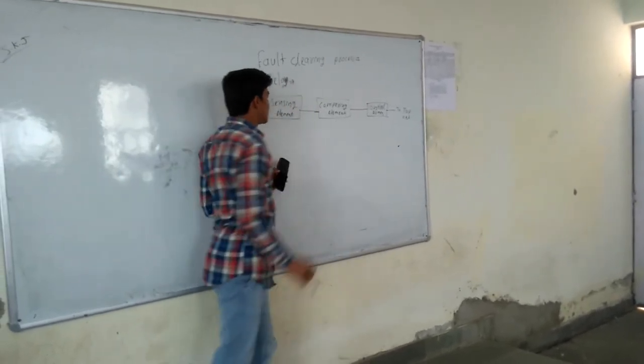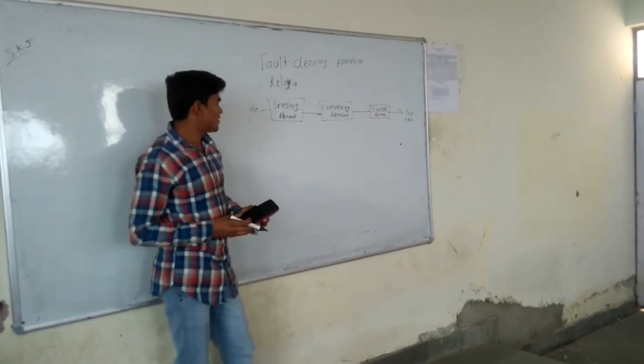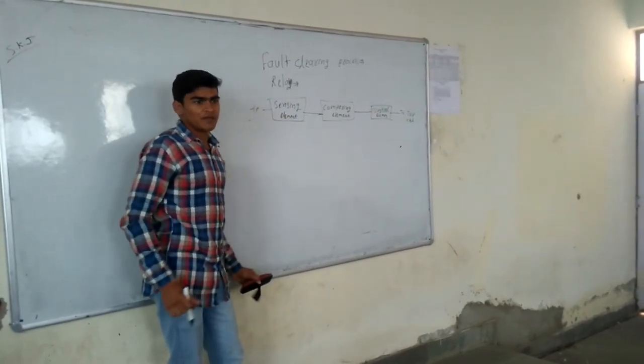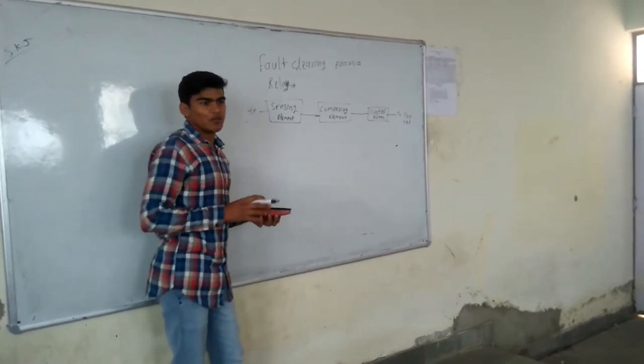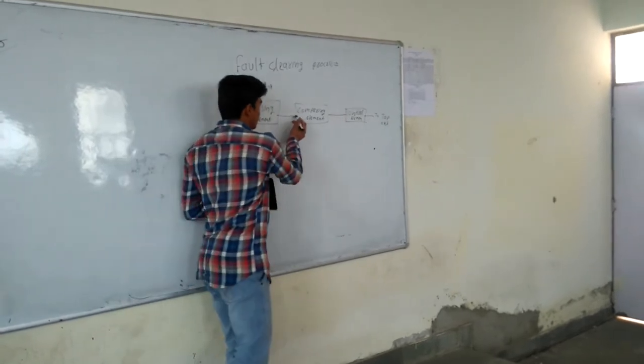Second is comparing element. Compare element is shown in the case where it compares between the actuating value of the current in transmission line and the predefined value of current in relay.